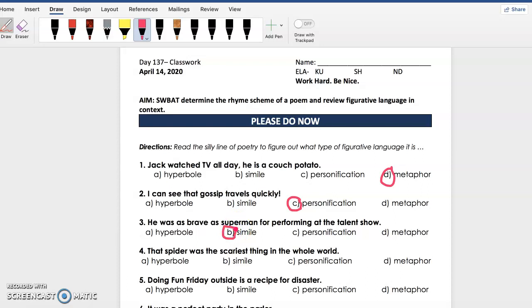Number four: That spider was the scariest thing in the whole world. Of course spiders are scary, I know, but they're probably not the scariest thing in the whole world. So we know that that is an exaggeration, it's a hyperbole.